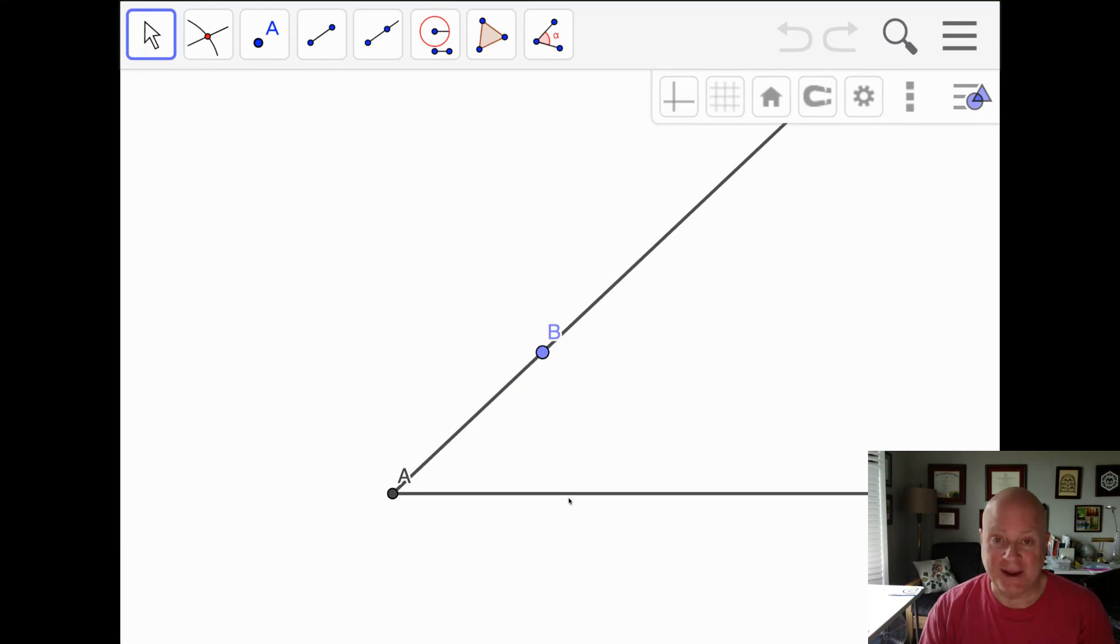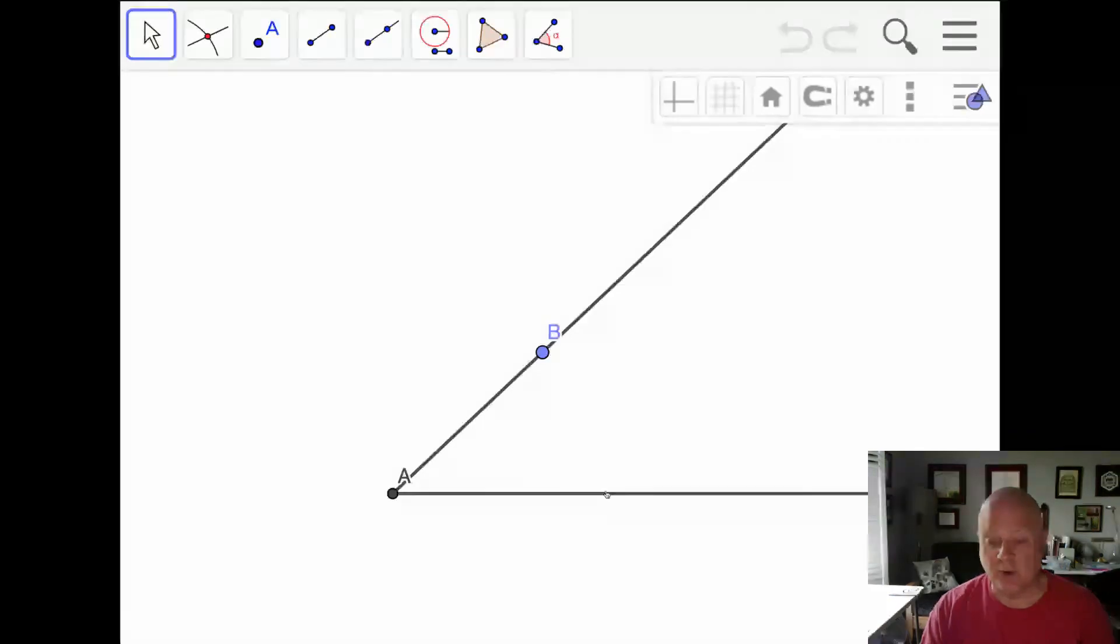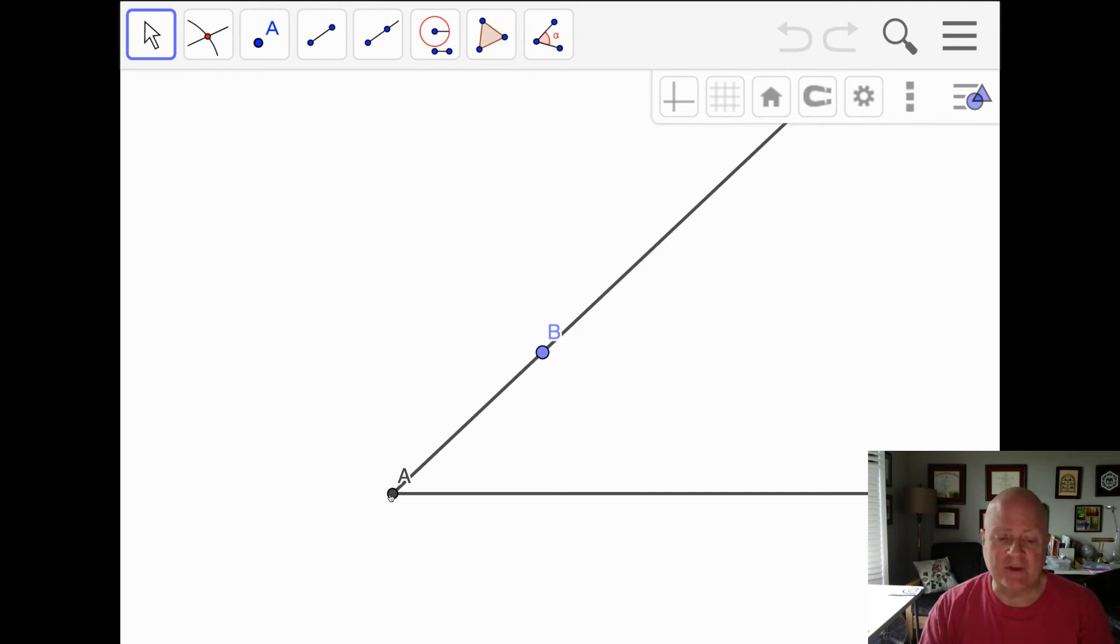We start with angle A, and you use the vertex of an angle to name it. If I use three letters, I would need another point over here on this side so that you would name it with three letters, and the middle letter is the vertex. A is fixed, you can see it's dark, and B I can actually move around. We'll do that later on to show you how it works.